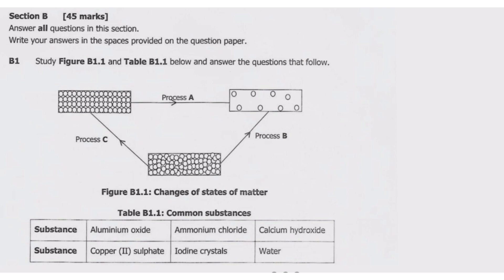B1 refers us to figure B1.1 and table B1.1. Figure B1.1 shows changes of states of matter, with process A, process B, and process C. Table B1.1 shows common substances: aluminium oxide, ammonium chloride, calcium hydroxide, copper sulfate, iodine crystals, and water.